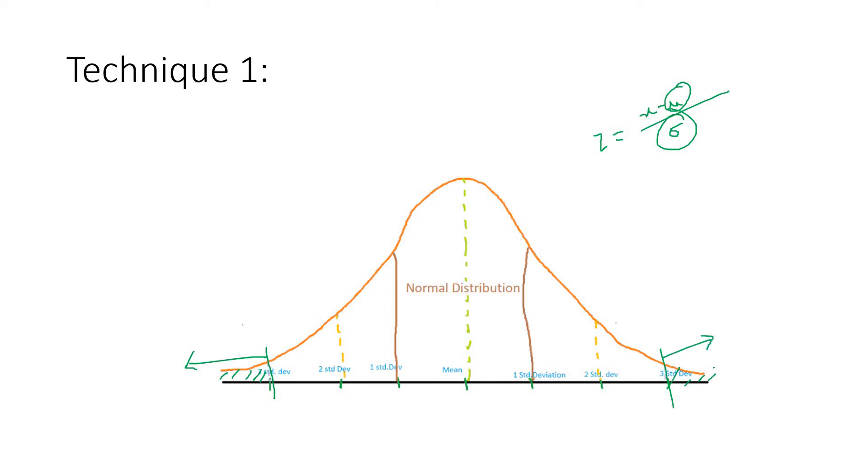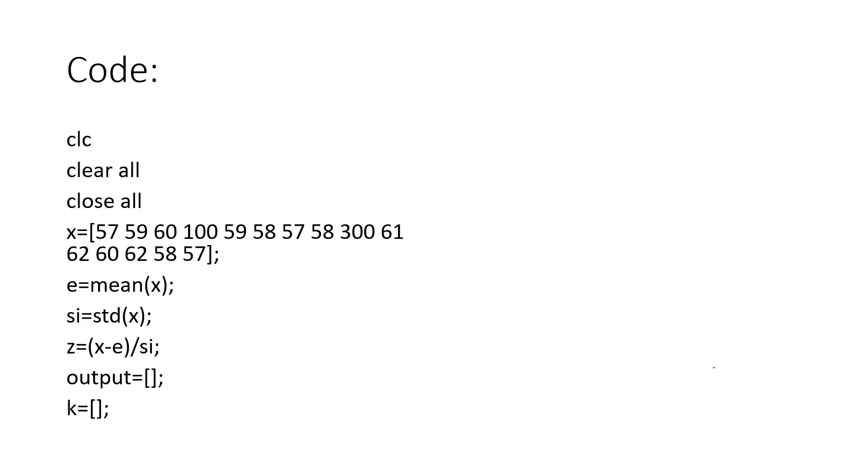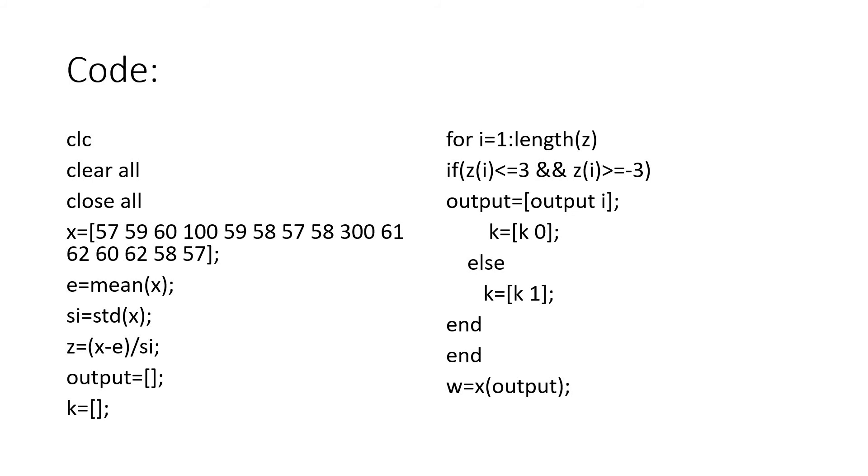Now let us directly go to the code. First of all I will be showing the code without using the MATLAB provided built-in function, and then we will check the built-in. Here is the simple code: clc, clear all, close all. Then I have taken data point x equal to 57, 59, 60, 100, 59, 58, 57, 58, and so on.